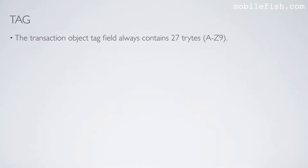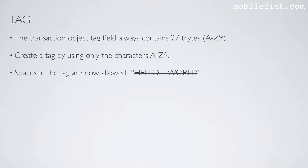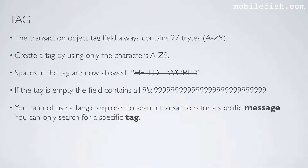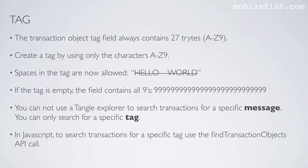The transaction object tag field always contains 27 trits. Create a tag by using only the characters A to Z and the number 9. Spaces in the tag are not allowed — for example, hello space world is not allowed. If the tag is empty the field contains all 9s. You cannot use a tangle explorer to search transactions for a specific message; you can only search for a specific tag. In JavaScript, to search transactions for a specific tag use the findTransactionObjects API call.